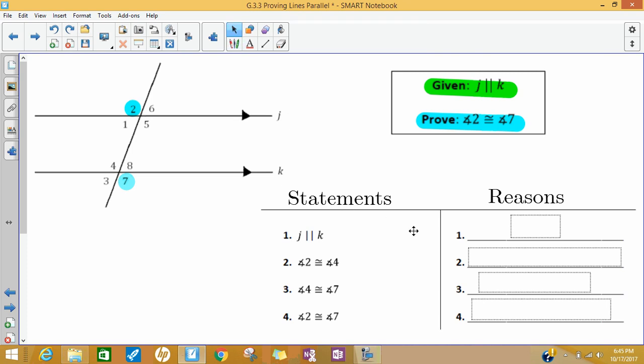When we start this two column proof, my first statement I make is just the information that I'm given and I can justify it's true by saying it's given. This next statement says angle 2 and angle 4 are congruent. Let's look at those. Those are corresponding angles, so my reason I can say that is that those angles correspond.